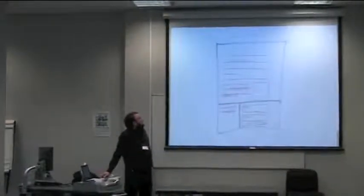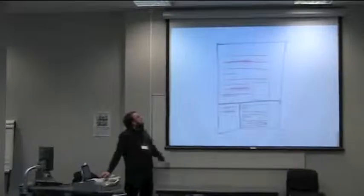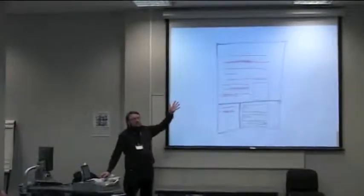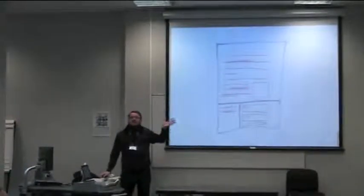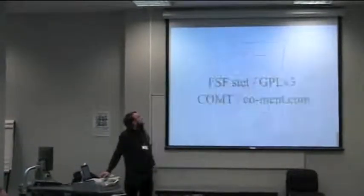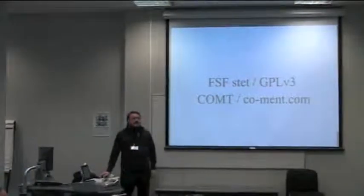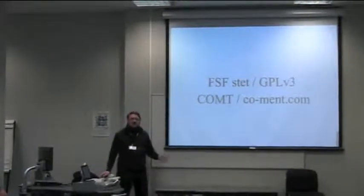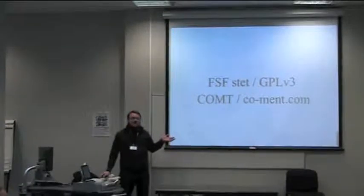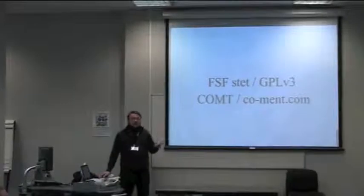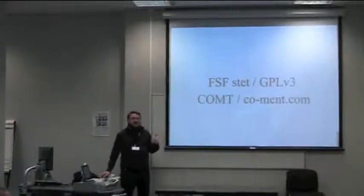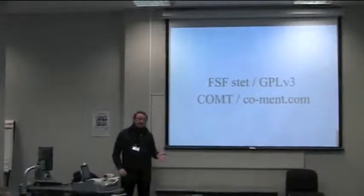What we mean with that is that anywhere you should be able to see in the text that there is something going on and then join in. This is actually something, this is a tool that exists, that does this. There are several, actually. The Free Software Foundation made a tool called STET during their feedback process around 2003.